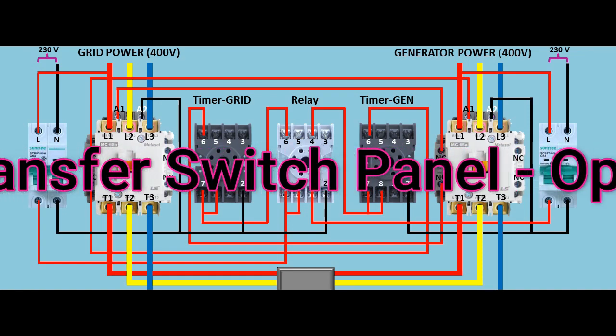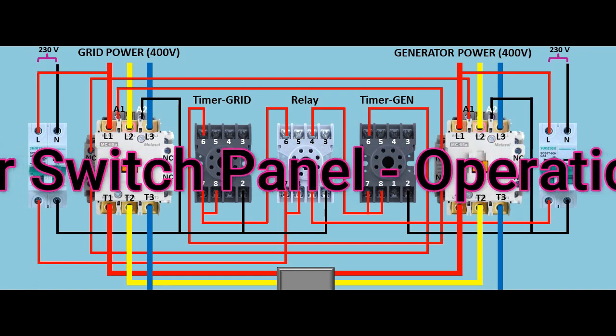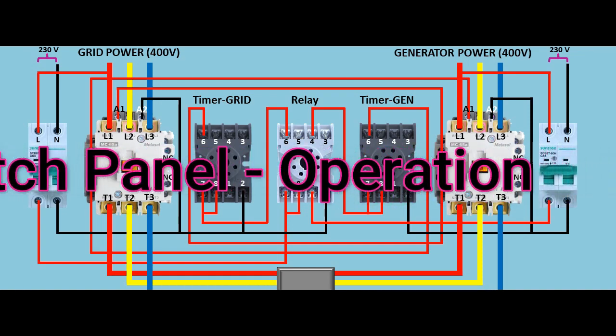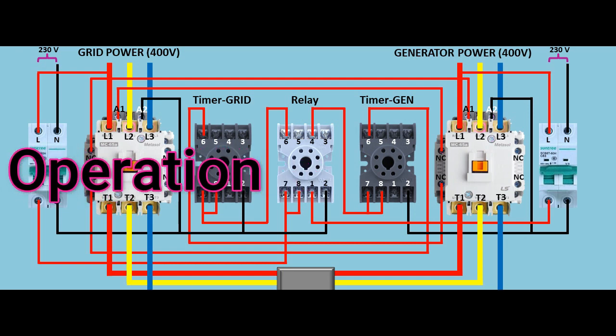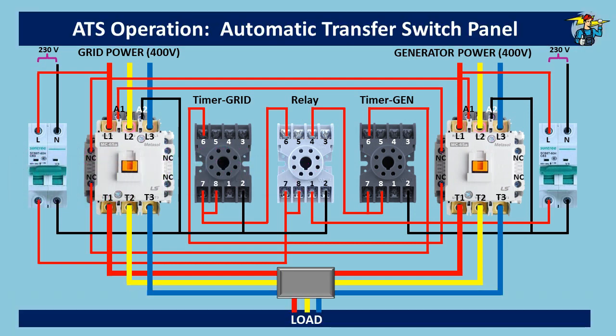Good day to everyone. Today we will see how standby generator power connects to the load automatically when grid power is interrupted. An automatic transfer switch panel can be arranged several ways according to requirements, but here we go for the basics to understand how it works. You are then free to modify it according to your special needs.